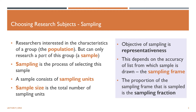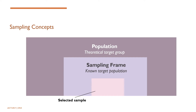Other sampling frames include the list of manufacturing companies or names on the unemployment register. Finally, the proportion of the units in the population that is used as a sample is called the sampling fraction. Here is a visual of the important sampling concepts: population or the theoretical target group, sampling frame or the known target population, and the selected sample.